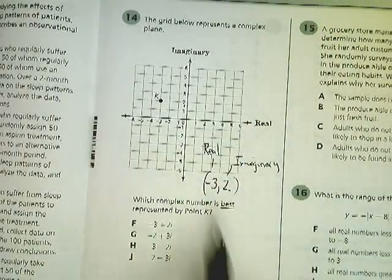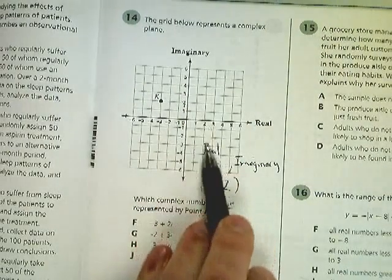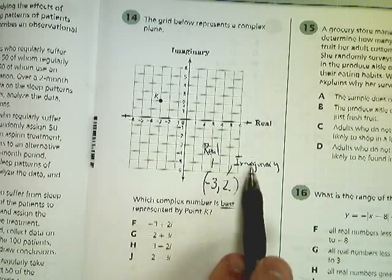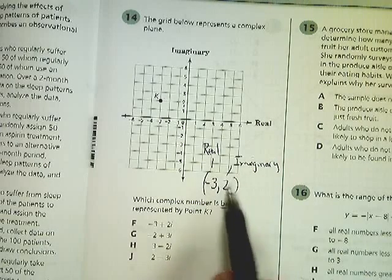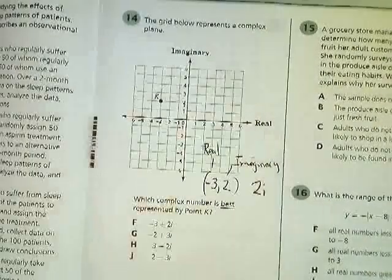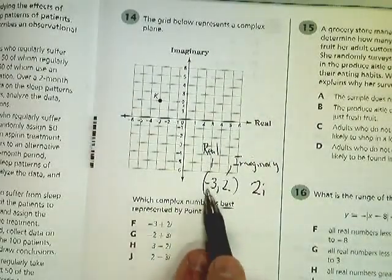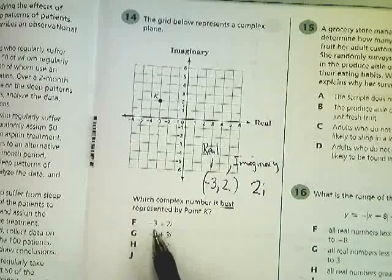Also very easy. So I'm going to look for something that has a real value of negative 3 and an imaginary value of 2. And when I talk about imaginaries, I'm talking about i, so 2i. So I'm looking for something that has negative 3 and 2i. And there it is.